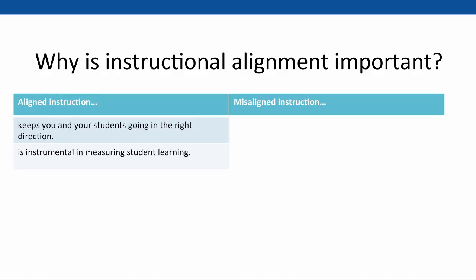Aligned instruction is instrumental in measuring student learning. If your instruction is aligned, you can be certain that your student assessments measure how well they've mastered what you've taught. Finally, aligned instruction helps properly measure the effectiveness of the instruction — if students poorly demonstrate mastery of a stated learning outcome, it can help you target areas for improvement.